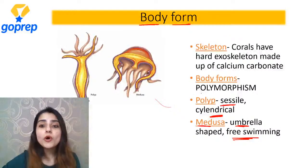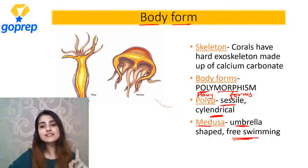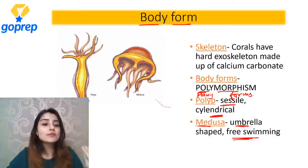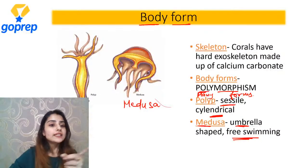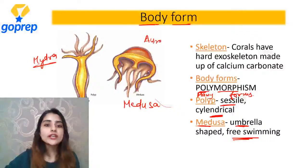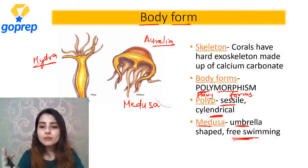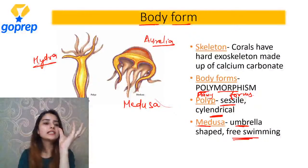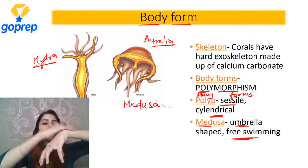These are the two body forms - polyp: cylindrical, sessile. Medusa: umbrella-like, free-swimming. Since ismein do body forms hain, alag-alag forms hain - poly means many, morph ka matlab forms. Isi liye hum bolte hain Coelenterates exhibit polymorphism because they exist in more than one form. Hydra exists in polyp form, aurelia - jellyfish - exists in medusa form.